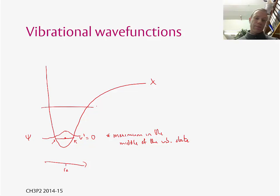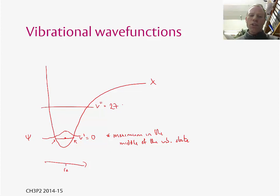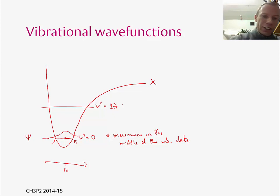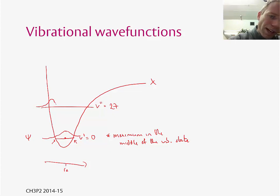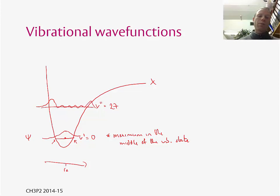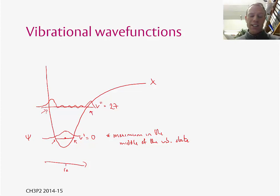Now if I take an excited vibrational state — say v double prime equals 27 — as you go higher up in energy the wave functions start to look more and more like you'd expect for a classical situation. The wave function has a maximum at one end, various wiggles in the middle, and then another maximum in probability at the other end. So in this case the most probable place for finding the molecule is at the ends, which is what classical mechanics would suggest.